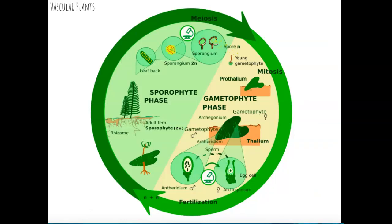Looking at the alternation of generations in vascular plants: starting with fertilization, the sperm cell from the antheridium fertilizes the egg cell in the archegonium. From the archegonium, a diploid sporophyte grows out as the archegonium slowly dissolves. When the fern is in the sporophyte phase, on the back of the leaves are sporangia — which are diploid — and they create haploid spores. The spores travel away from the parent plant and create the gametophyte phase, which has the male antheridium and the female archegonium, and the process continues.